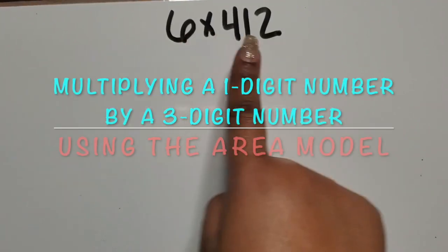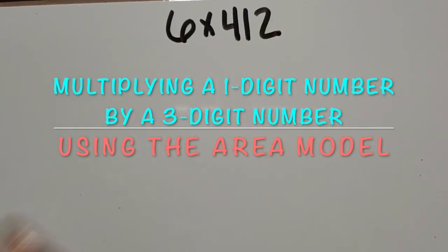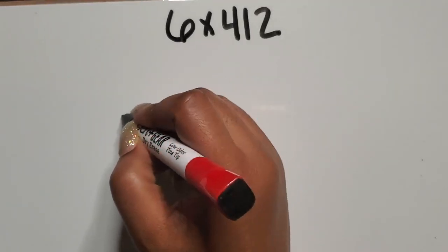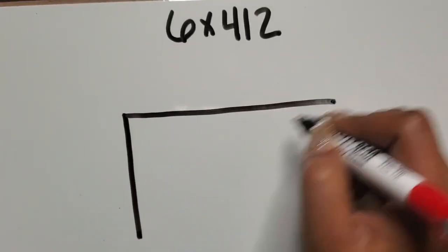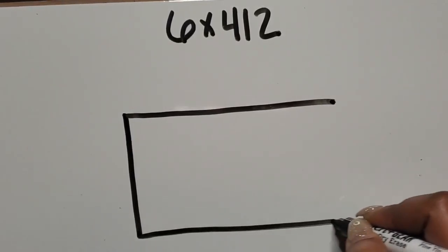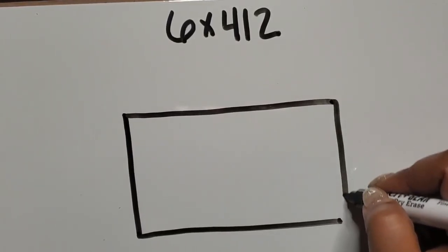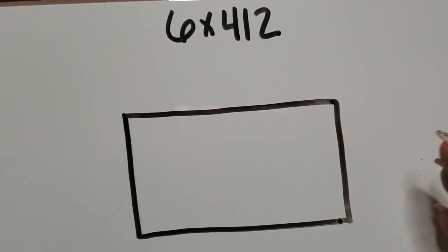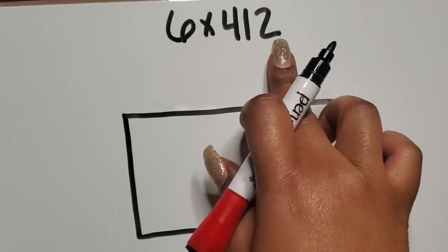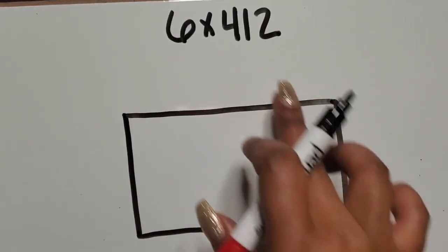We're going to multiply a one-digit number by a three-digit number using the area model. I'm going to start by drawing my rectangle and I'm going to make the top and bottom of the rectangle, those sides, the top side and bottom side, longer because it's going to be representing the amount in each of the rows.